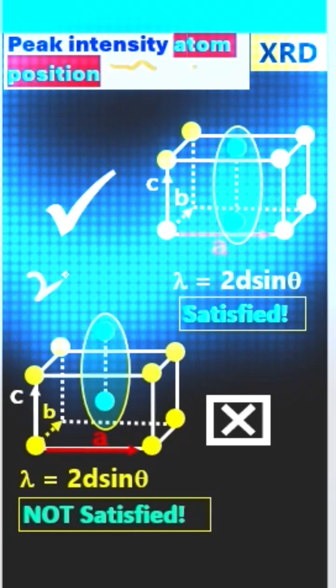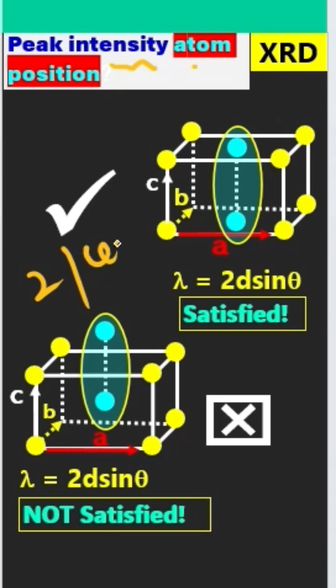Both have two atoms per unit cell. This is called the base-centered unit cell. This is called the body-centered unit cell.